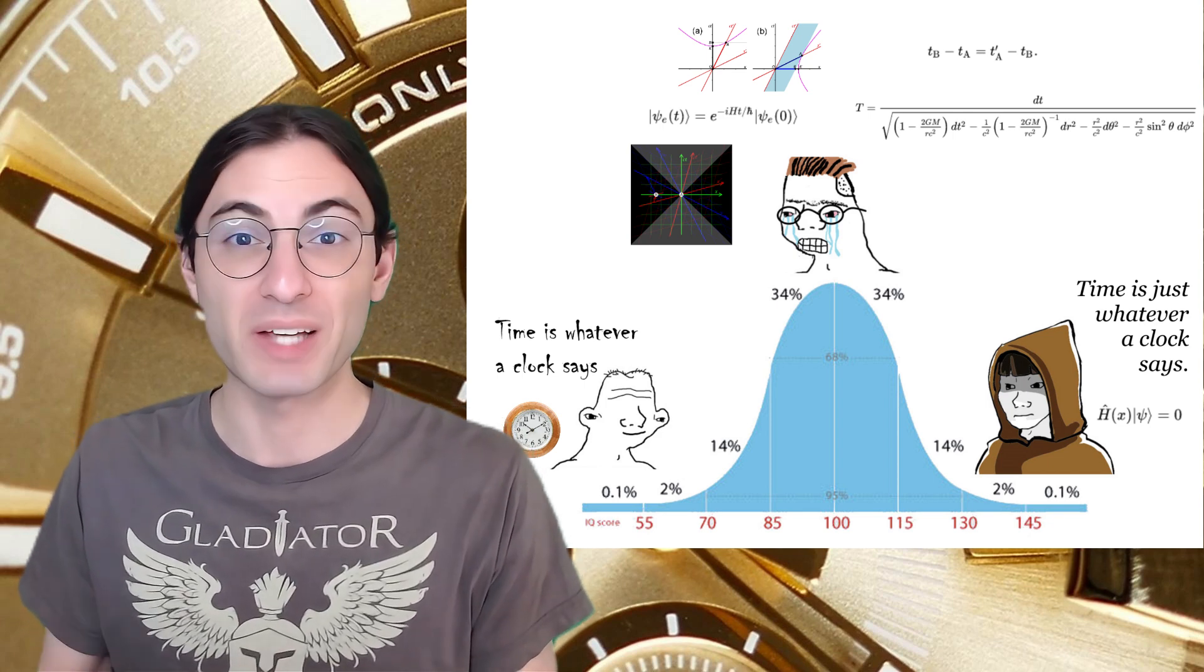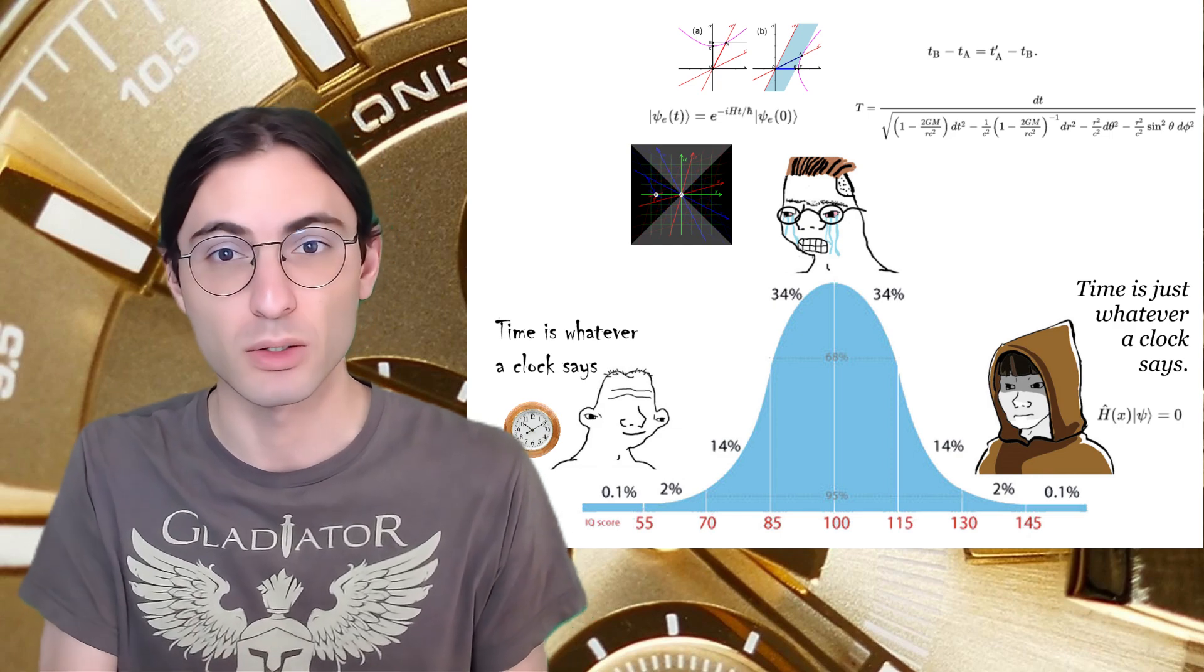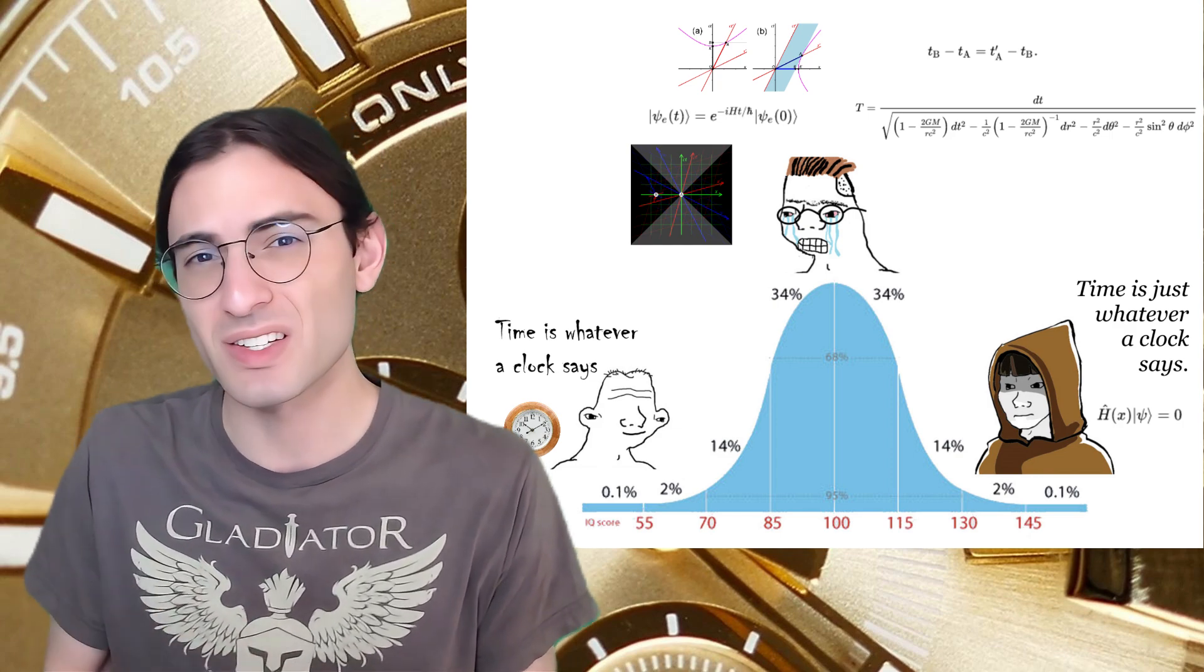Under this view, the universe is best described as timeless, with time only being a relational description of events in the universe. For those interested, this is consistent with the B-theory of time. But how, then, is there time in a universe that is fundamentally timeless?